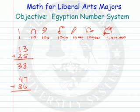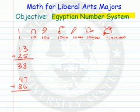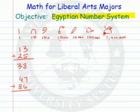In this video, we're going to look at the Egyptian number system. This is a system that uses hieroglyphics — sacred pictures — to represent numbers. It's a system that started about 3000 BC.